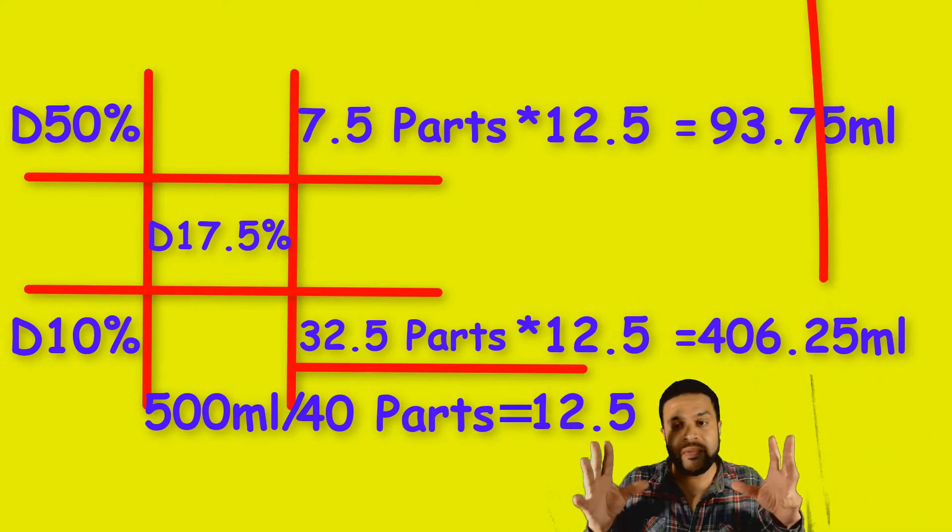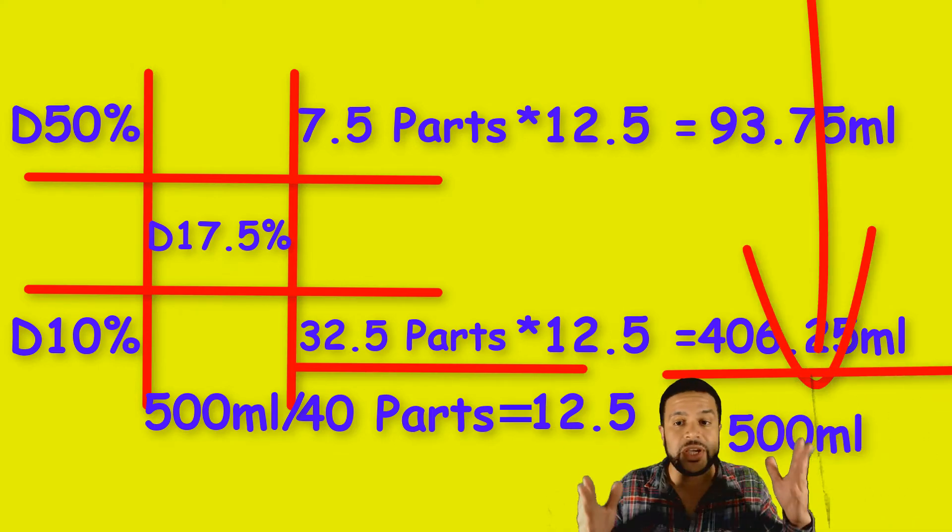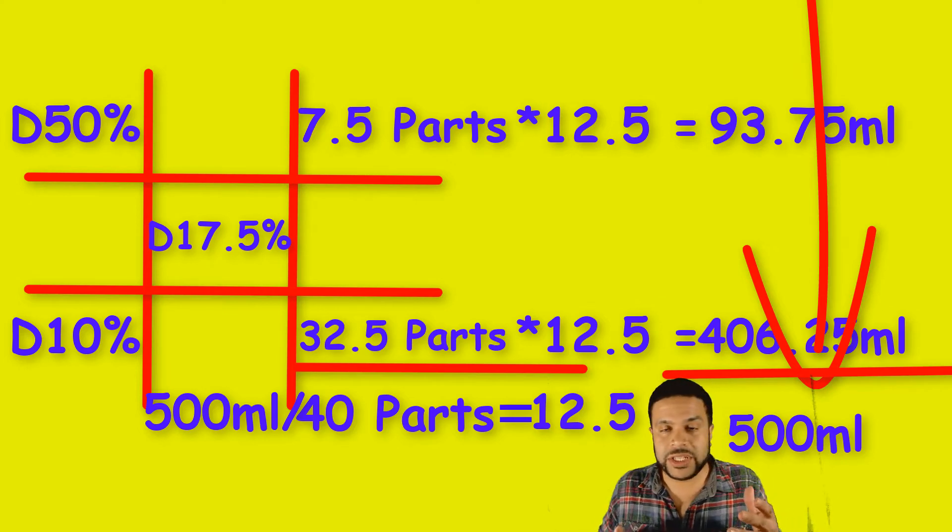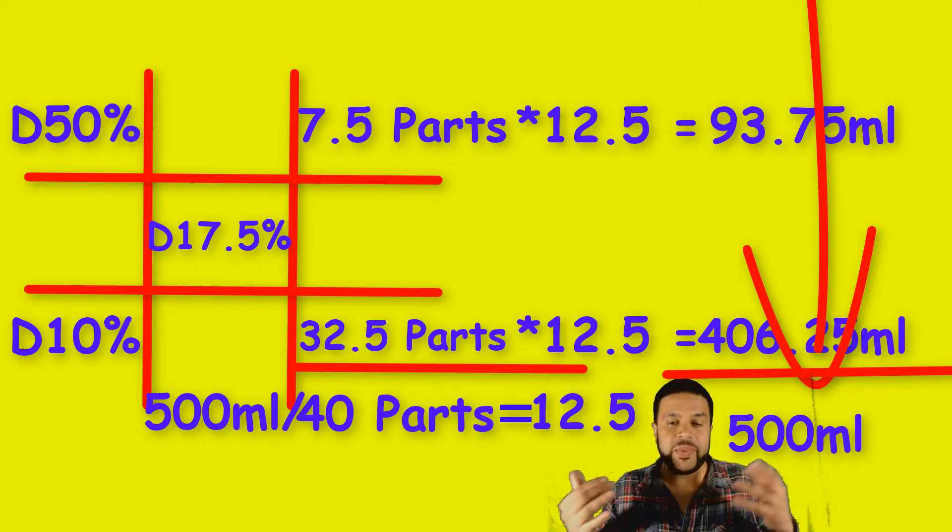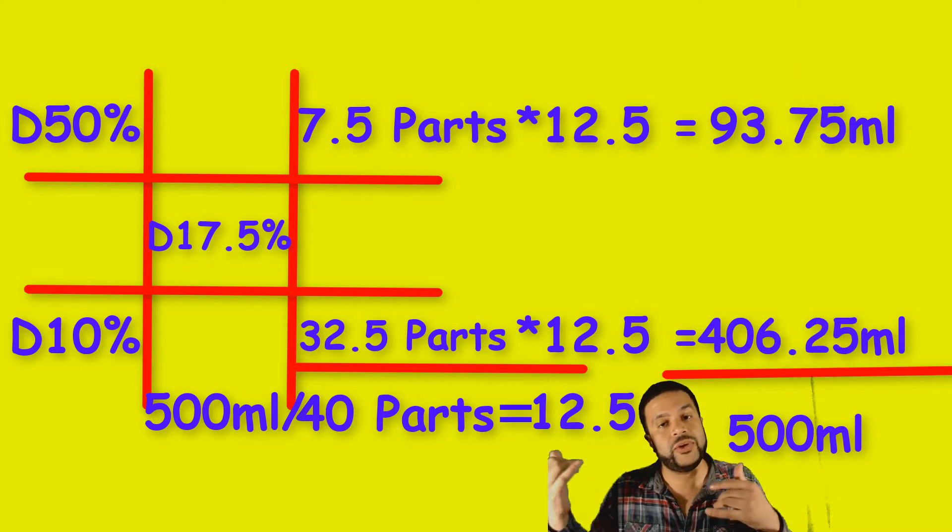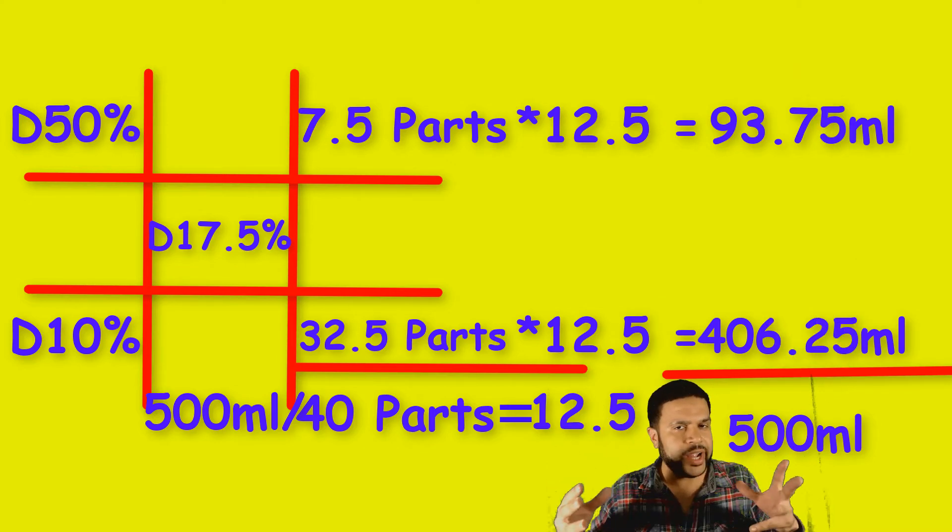Now, if you want to take these two volumes and add them together as a double check, you can do that. If you add 93.75 and 406.25, that's going to give you the total volume of 500 mls, which is the amount that you're trying to compound. So it's a way to double check everything.